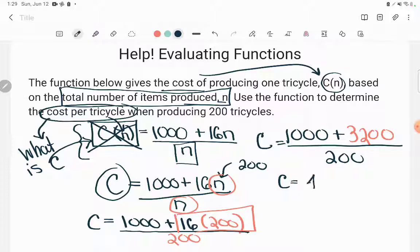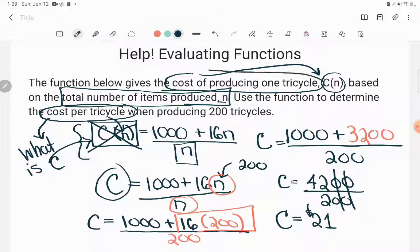So a thousand plus 3,200 will give me 4,200 divided by 200. Remember, that's what a fraction bar means. Oh, and I can use my little canceling trick. Again, you can also use your calculator. And I get the answer 21. 4,200 divided by 200 is 21. And what did we say this C represented? Well, we said that the C was the cost of producing one tricycle. So what am I saying here? I'm saying that the cost of producing one triangle is $21.